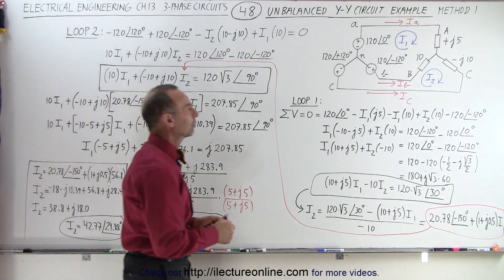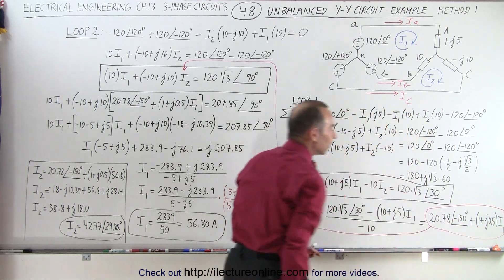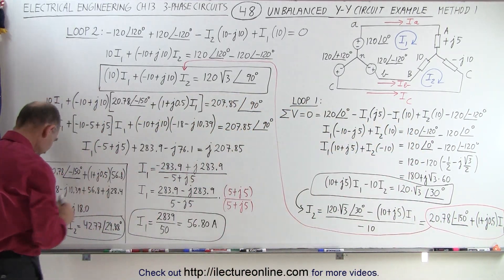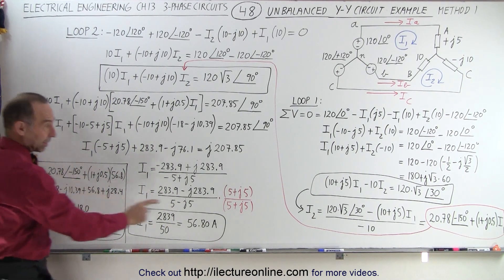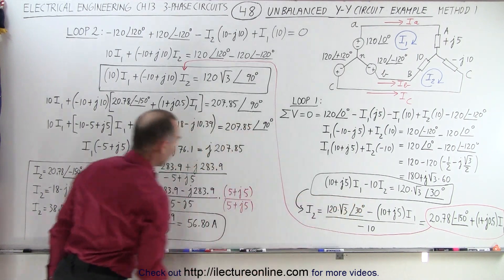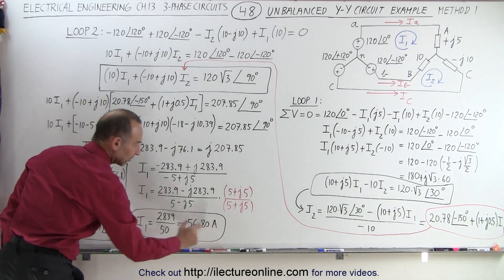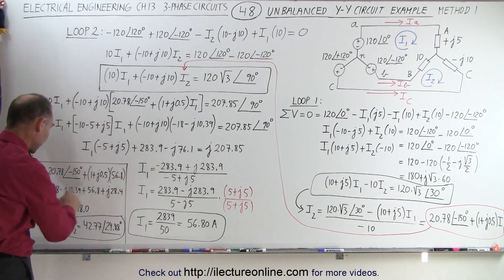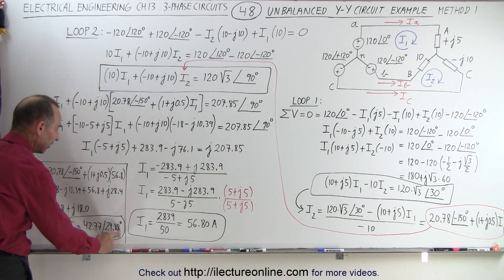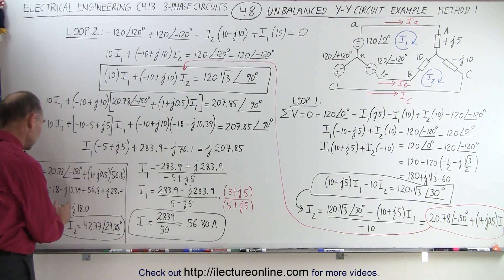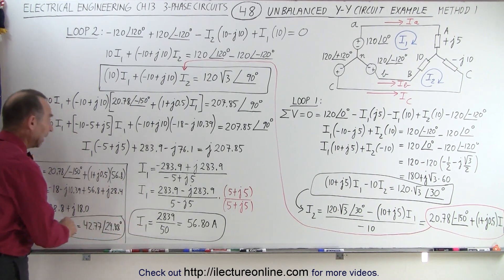Now we need to find I2. Since we have the expression where I2 equals 20.78 at a phase angle of minus 150, plus (1 plus J0.5) times I1, and I1 is 56.8, we multiply through and I2 becomes equal to 42.77 with a phase angle of 24.88 degrees. So this gives the real and imaginary, or magnitude and phase angle format, for both I1 and I2.